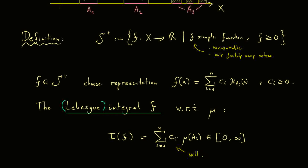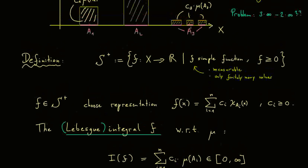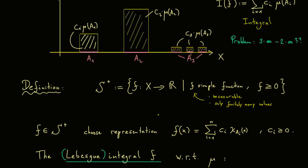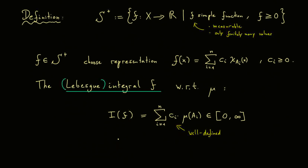One fact I can give you immediately: this definition for the integral is a well-defined object. This means it does not depend on the chosen representation for our simple function f. So if you choose another representation with this property, you get the same number out. The visualization makes this clear: it does not matter how you split up these rectangles here — the sum of the areas should always be the same, no matter how you split up these sets on the x-axis or the c-values on the y-axis. In other words, it makes sense that this integral is indeed well-defined.